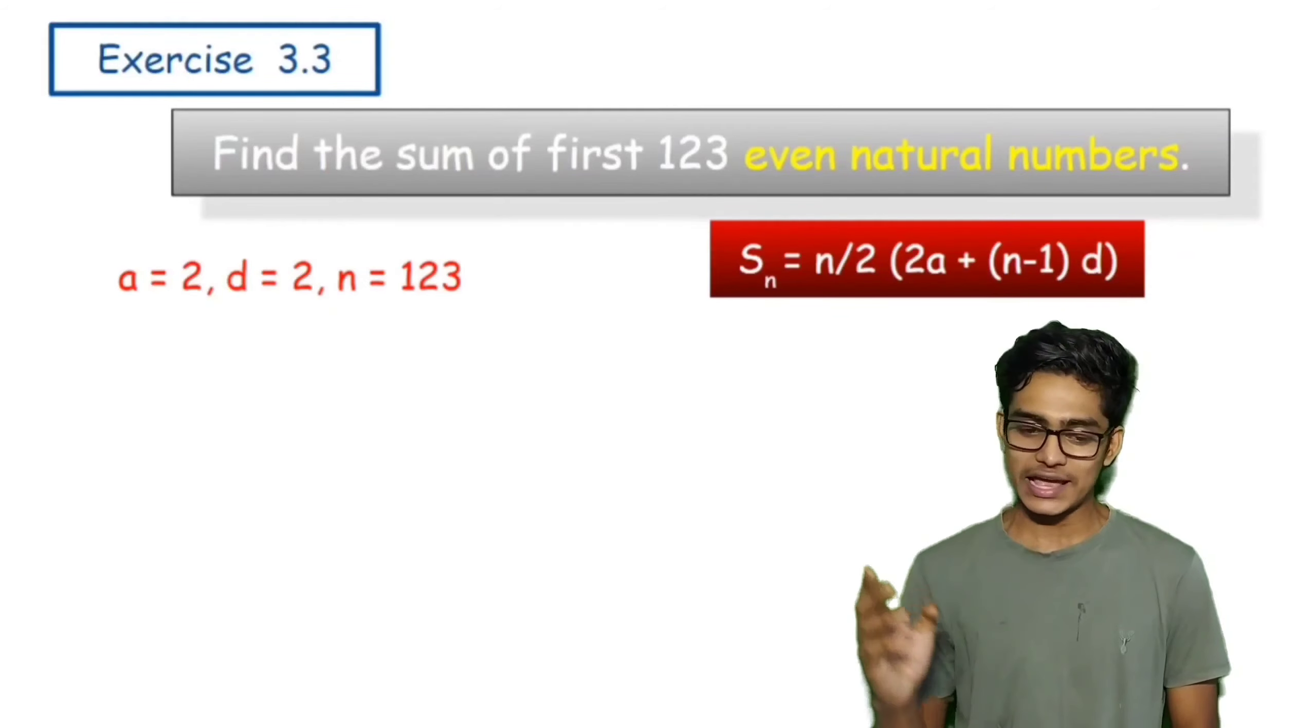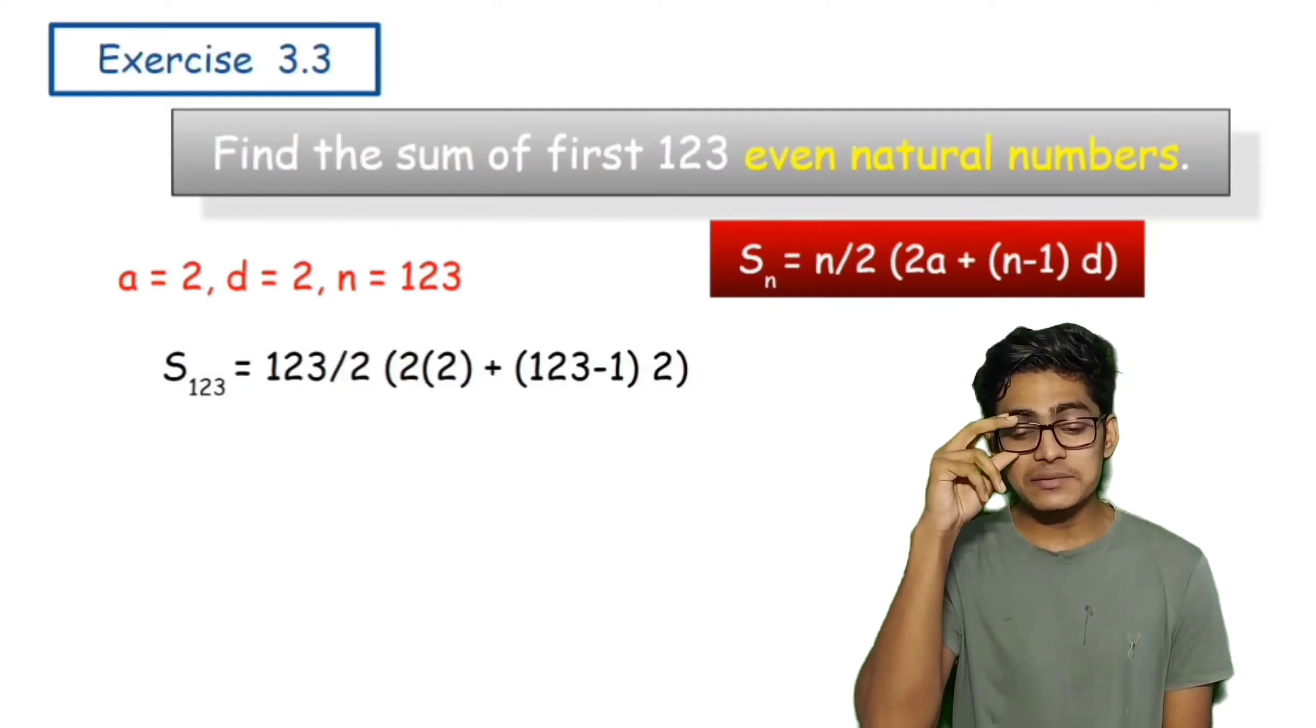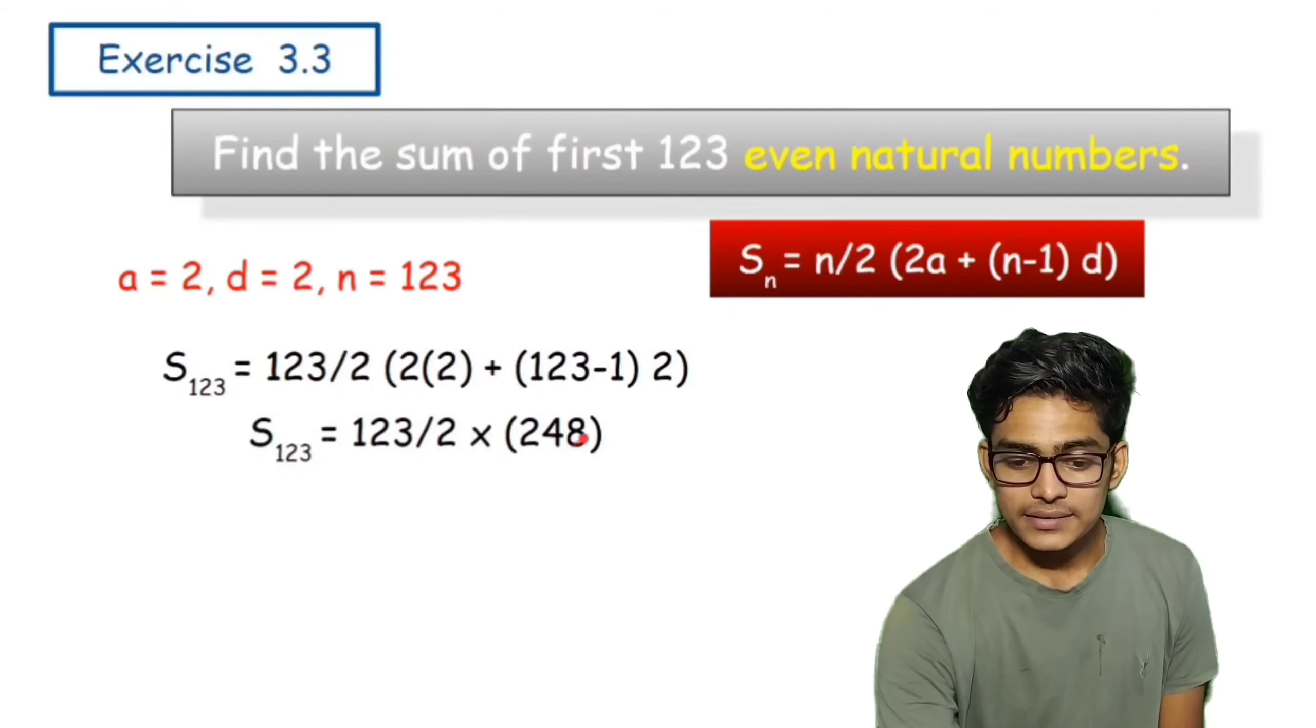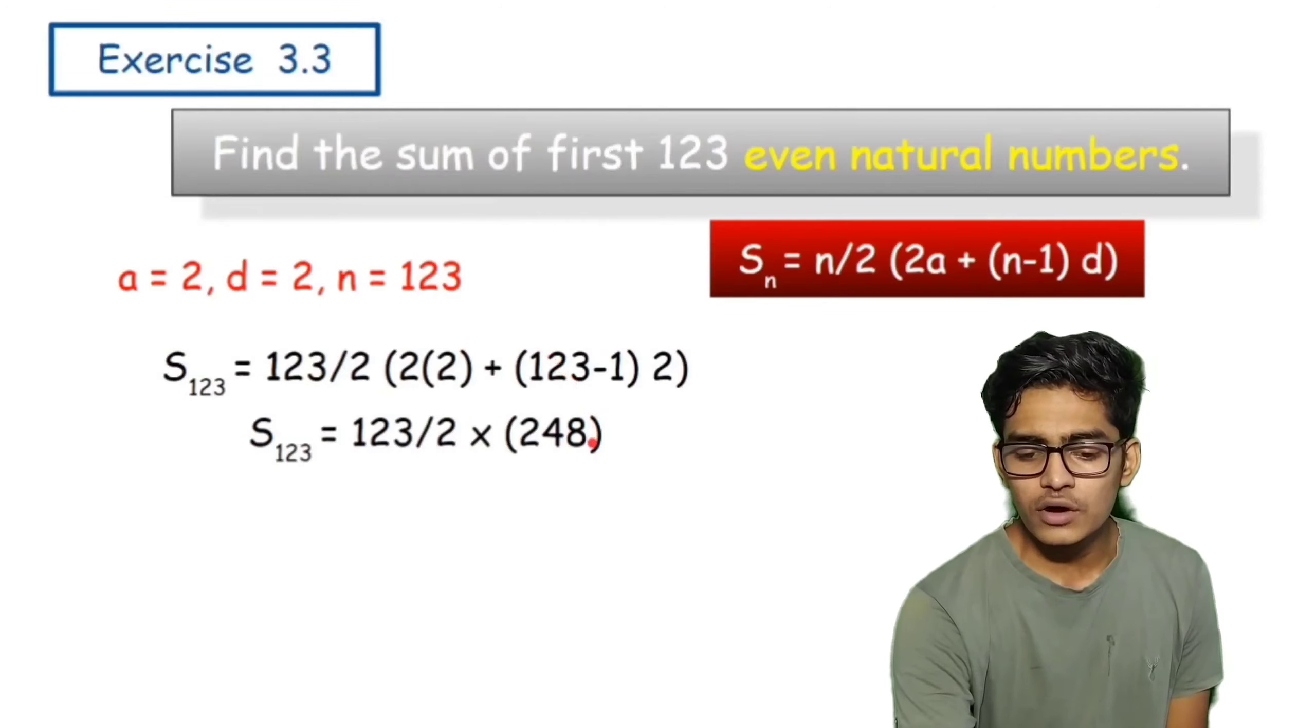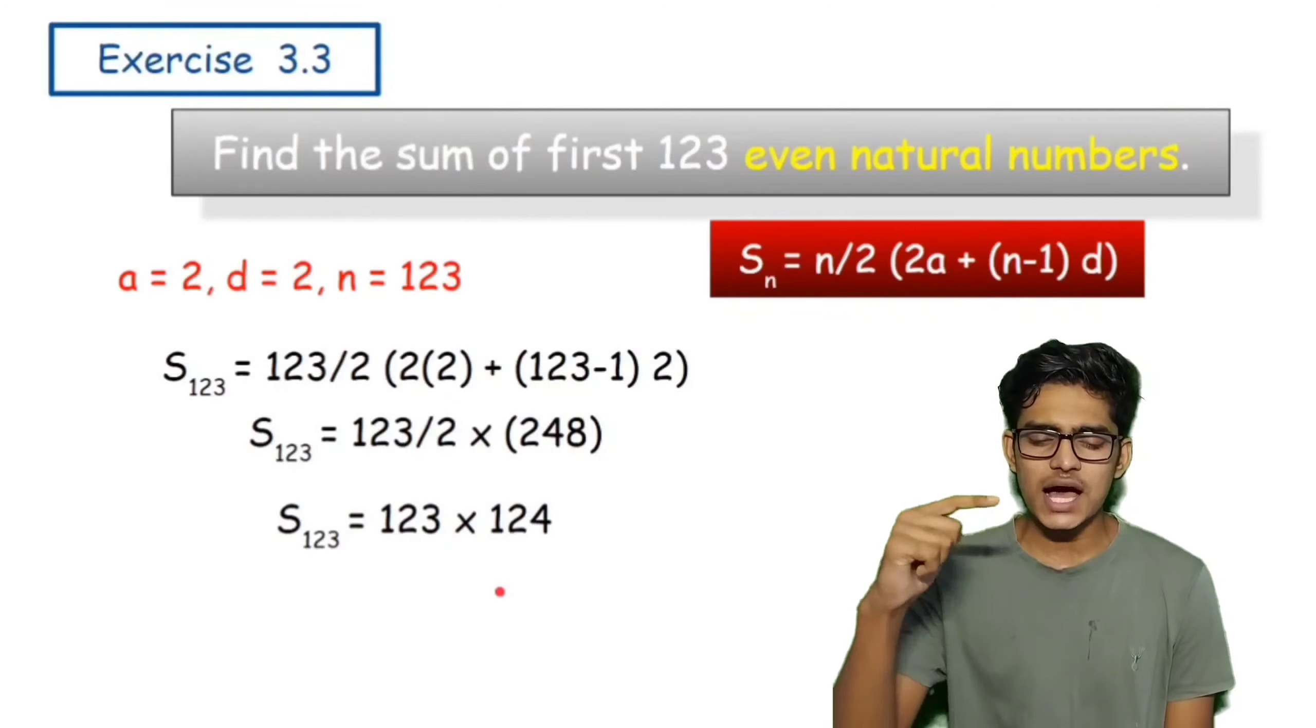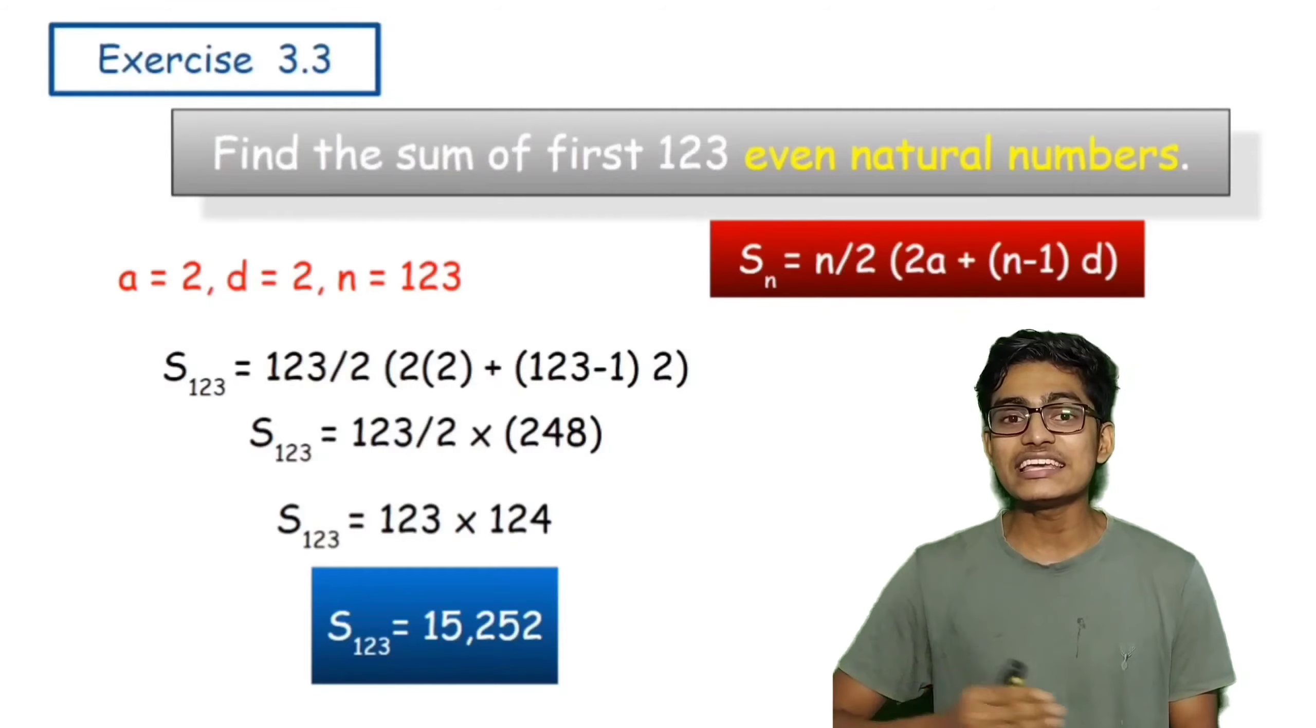Now if we calculate, hum logo ne kya hai - this wala part basic mein hum logo ko s_n pehle 1 minus kiya hai iss ko, isse multiply kiya hai. 2 se multiply kiya hai toh do haiya 4 bange janda hai and this value well bhi equal to 2 2 4 and that we add with 4 gives us 248. We simply divide this number by 2 and after calculating, if we have a calculation then the answer is 15252. That is 15252 is the value for the sum of 123 even natural numbers.